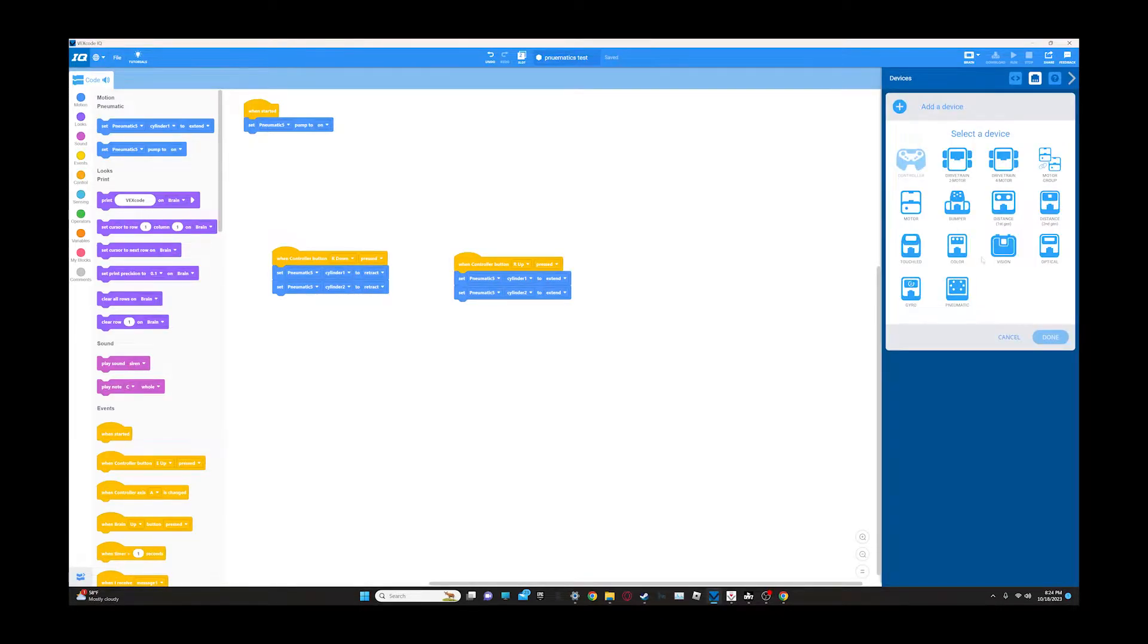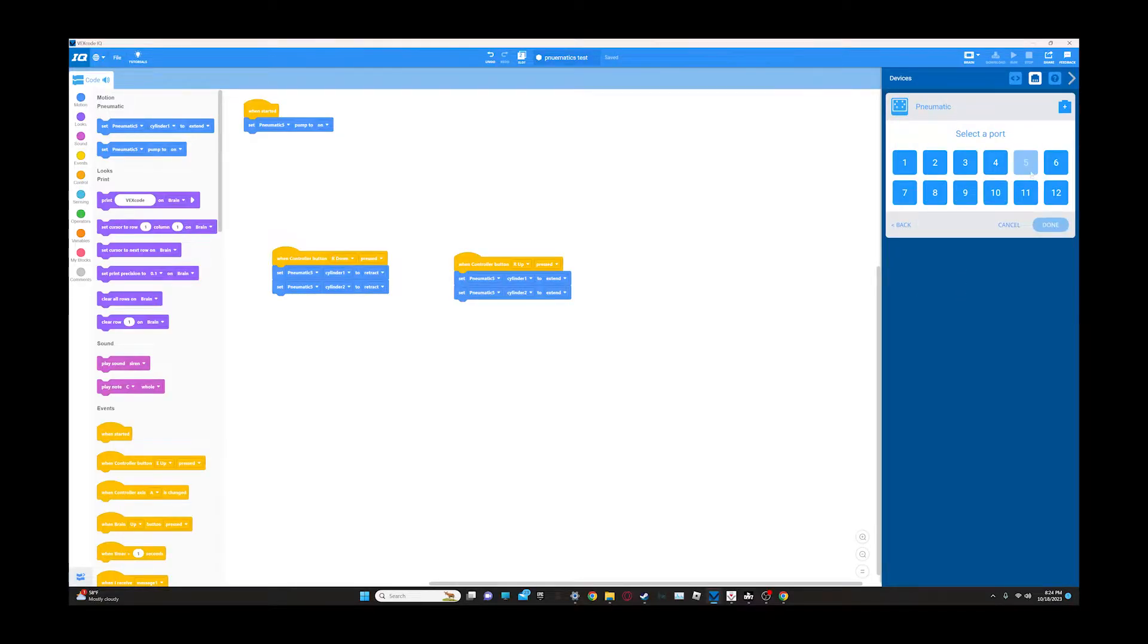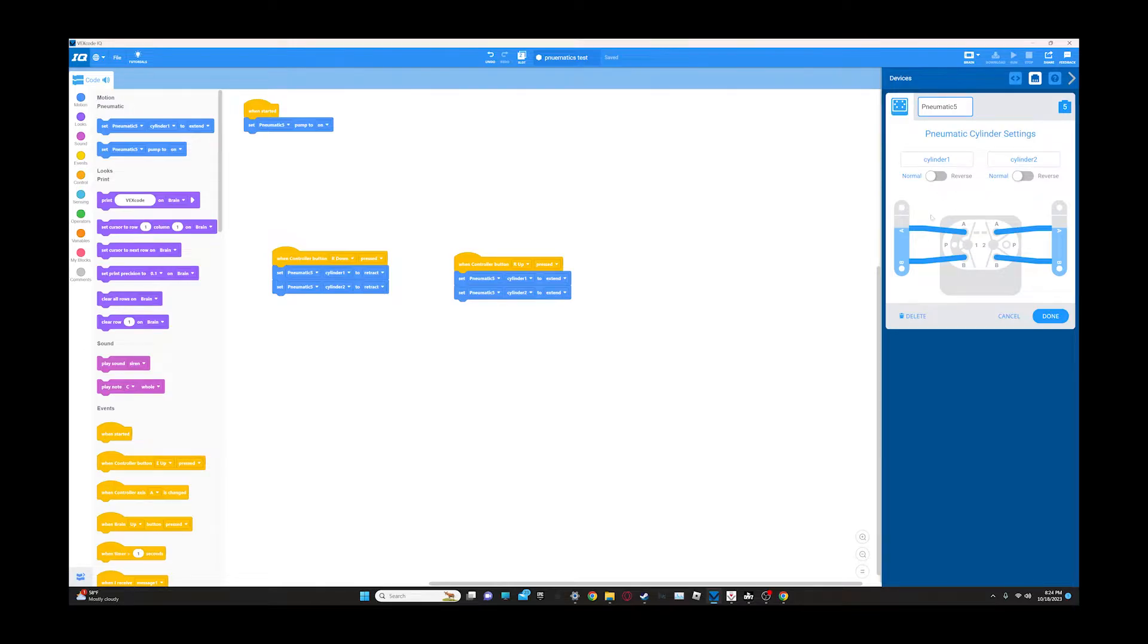So, add a device, pneumatic, and then you select your port, done. And once you go into there, probably won't have to change any settings because the way we set it up, A and B aren't going to be flipped. So you click done, maybe if you want to change the name, click done.